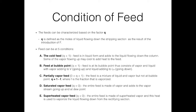The feed can be at five different conditions. The first condition is the cold feed, where Q is more than one. The feed is primarily in liquid form and it adds to the liquid flowing down the column. There is another flow coming down from the rectifying section due to condensation, and this feed adds to that flow. Some of the vapor flowing from the stripping section would be cooled by the downcoming flow introduced by the feed.